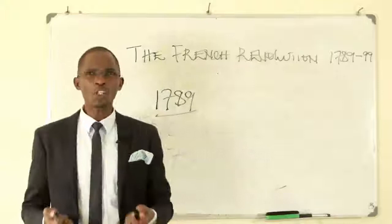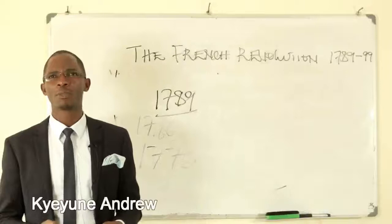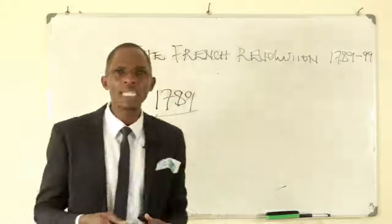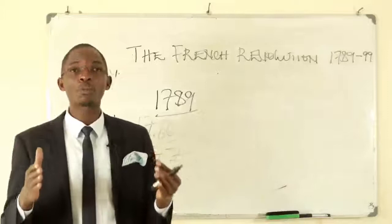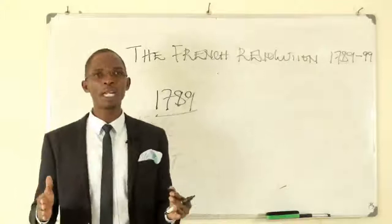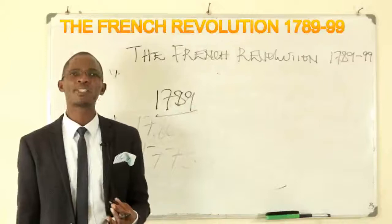The other thing we blame King Louis for is that he lacked control of the army. He failed to be in full control of the army. A country's prosperity and might is largely measured by the discipline, integrity, and loyalty of the army. In the French society by 1789, King Louis XVI had lost control over the army.